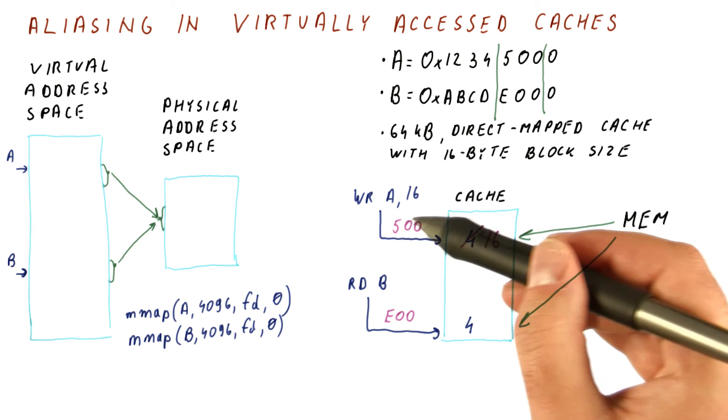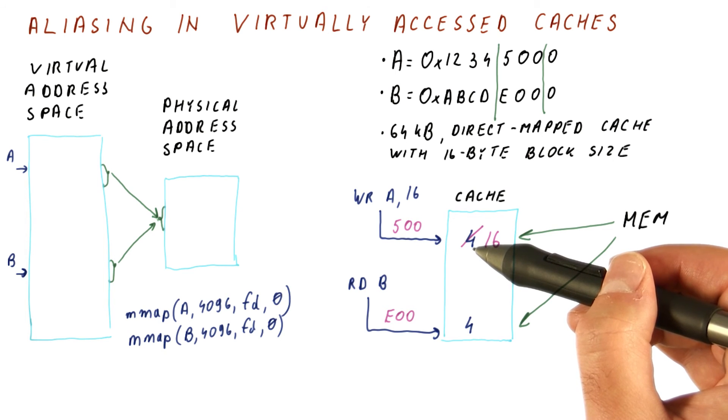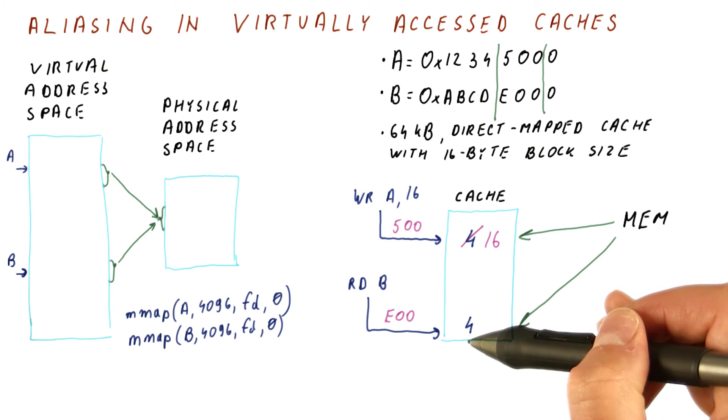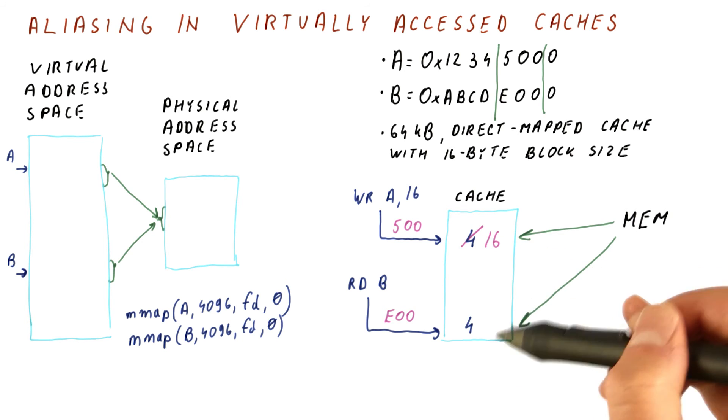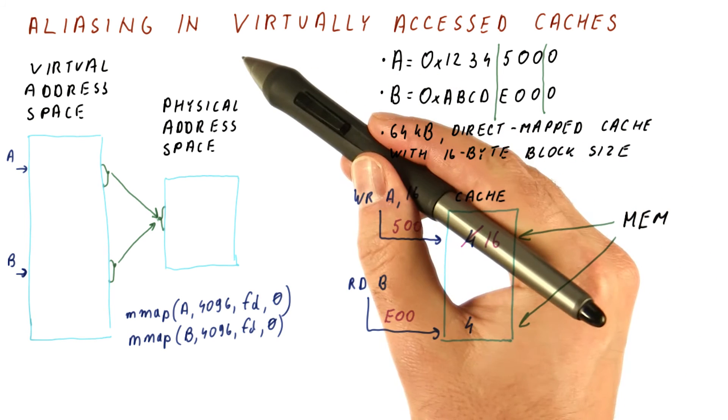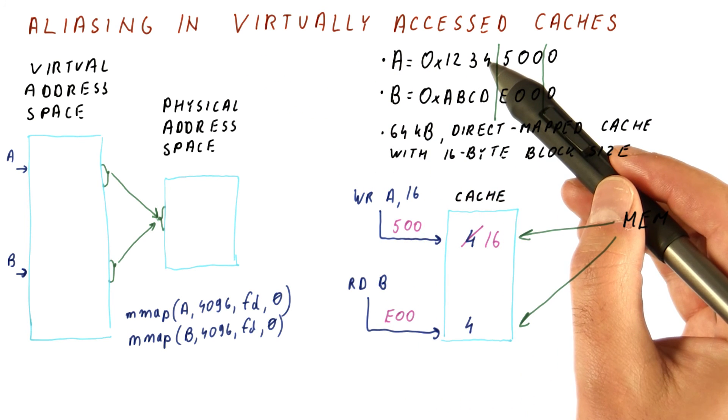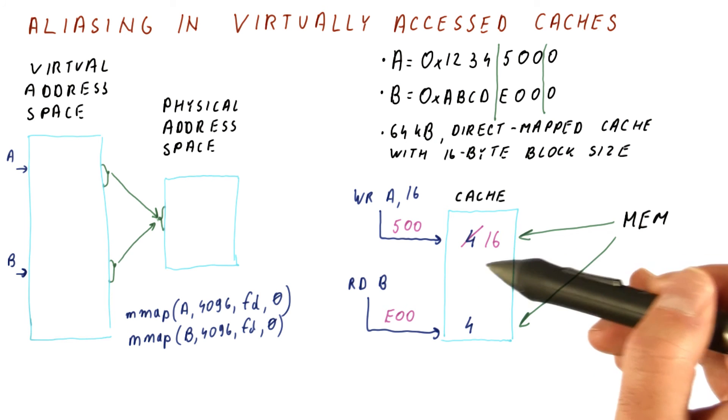Every time we write to any virtual location, we would have to do a check for aliases or different versions of the same physical data in the cache. And either invalidate them, remove them from the cache, or update them so that they would see the new value. And this is really expensive to do, and it kind of defeats the purpose of virtually accessed caches, which are all about the latency and not needing to do translation.